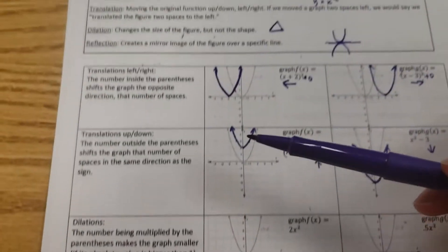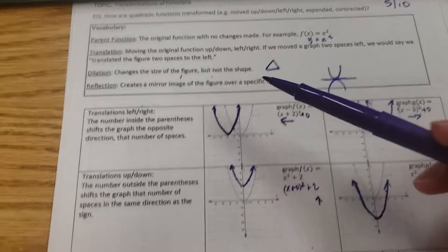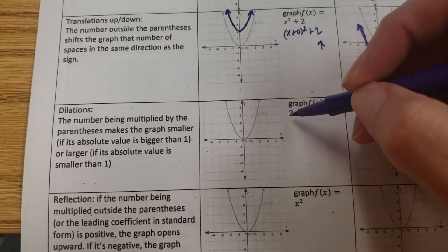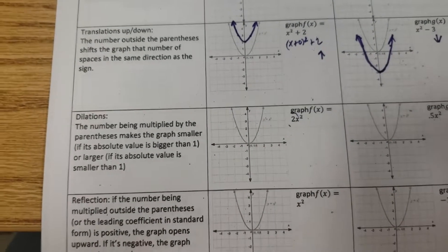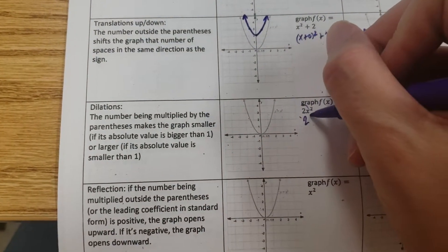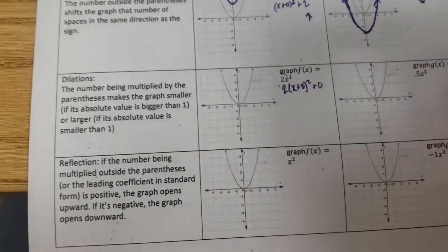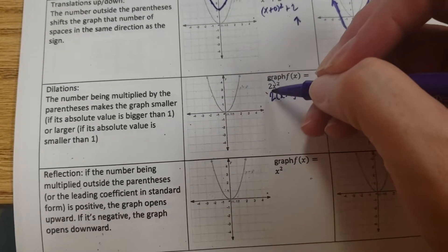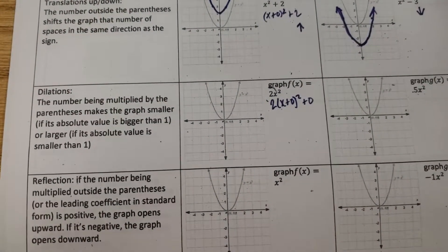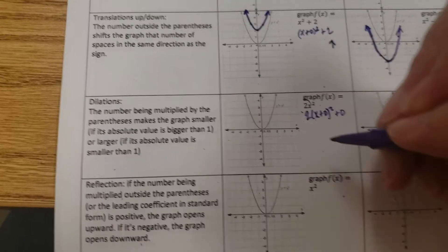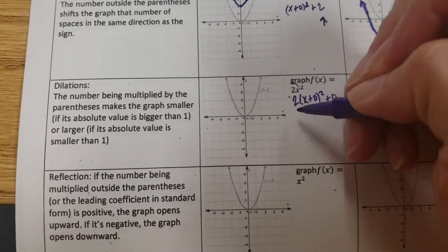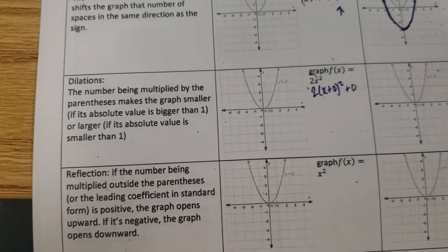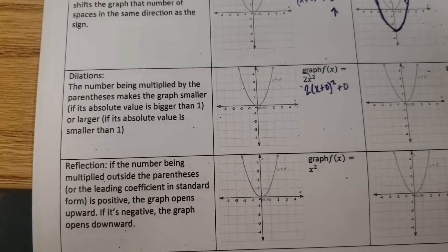Dilations are where it changes the size of the figure but not the shape. A dilation is when the number being multiplied out here affects the size of the graph. We can put a zero in there to make it true vertex form. What happens in the force field around the x squared and the parentheses? Everything becomes opposite. So it seems like multiplying by a large number like 2 would make your graph bigger — however, the opposite happens and your graph actually gets smaller.